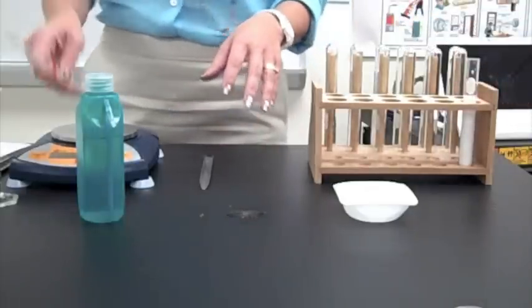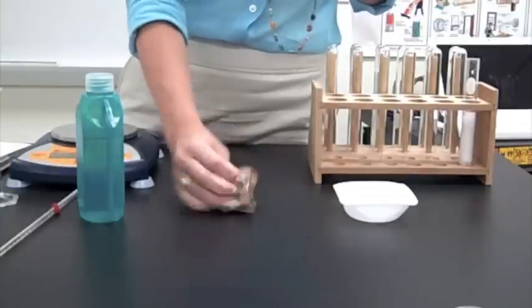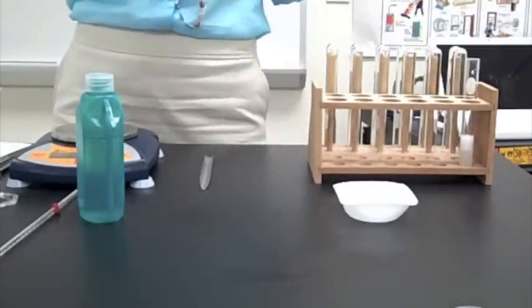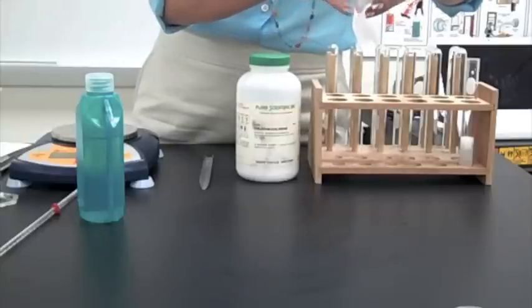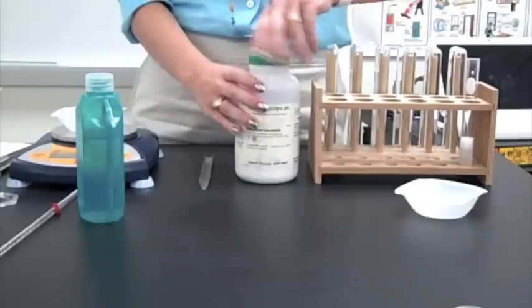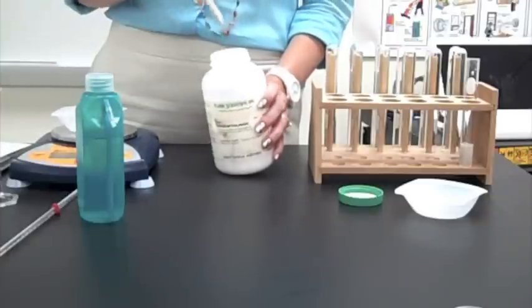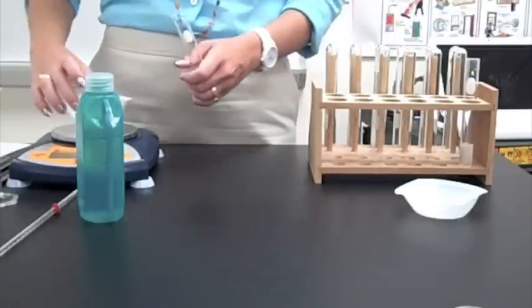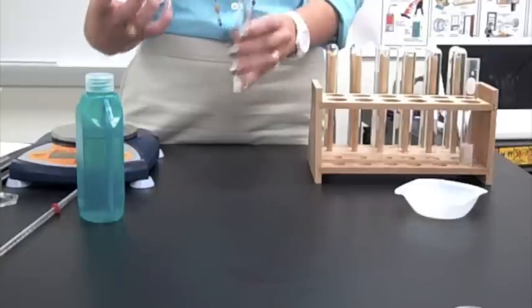Now, the second reaction we're going to do involves calcium chloride. Calcium chloride says we need 1 gram in another weigh boat. Zero it out again. And we need to measure out 1 gram calcium chloride. 1.02 works for us. And using the same solid transfer technique, pinch either side, put it in the test tube. And there you go.